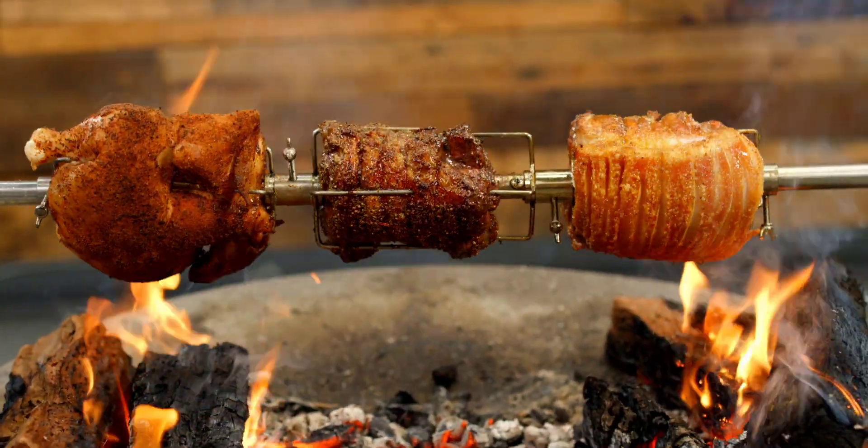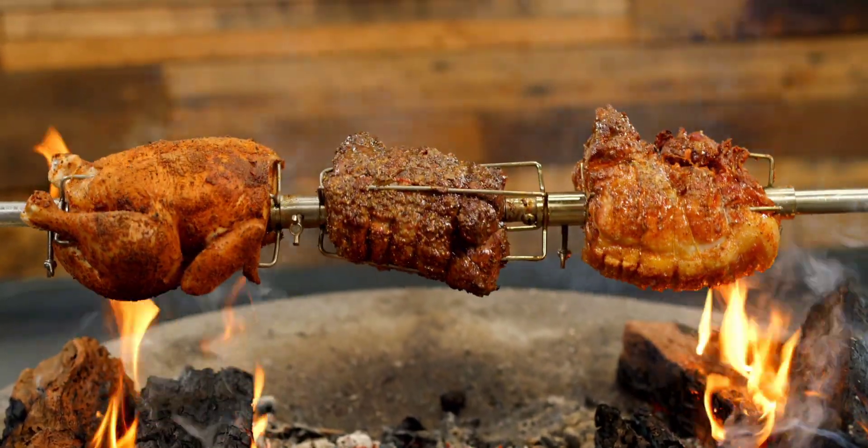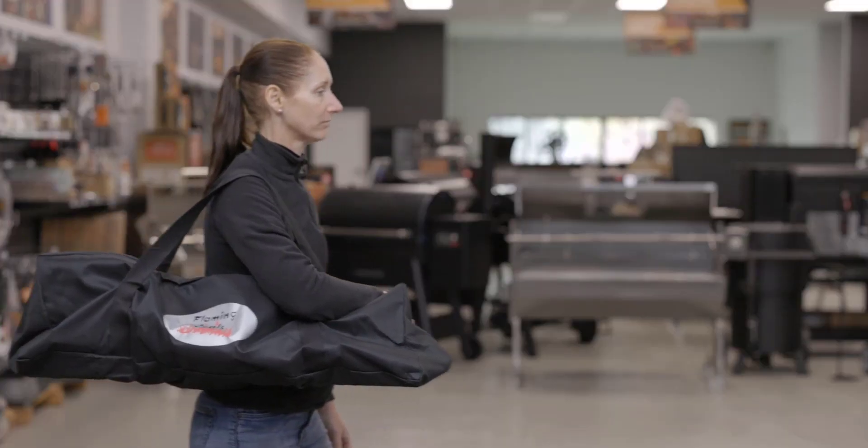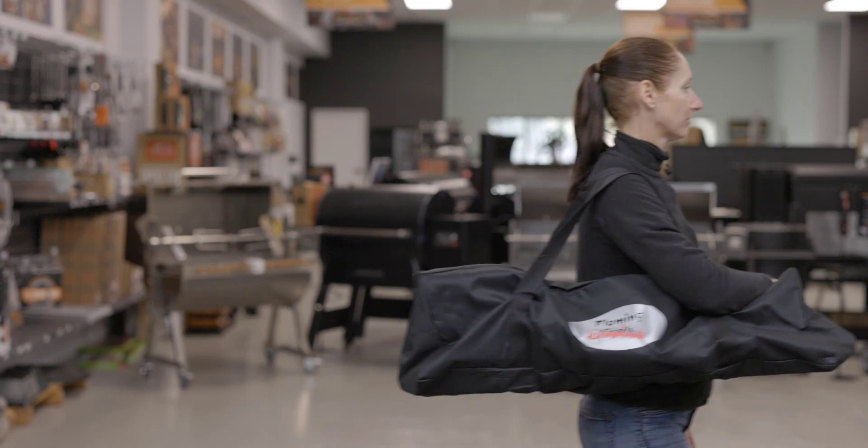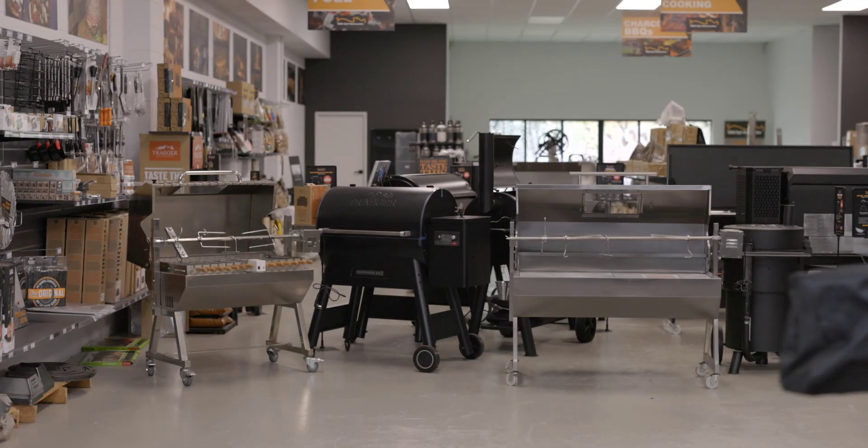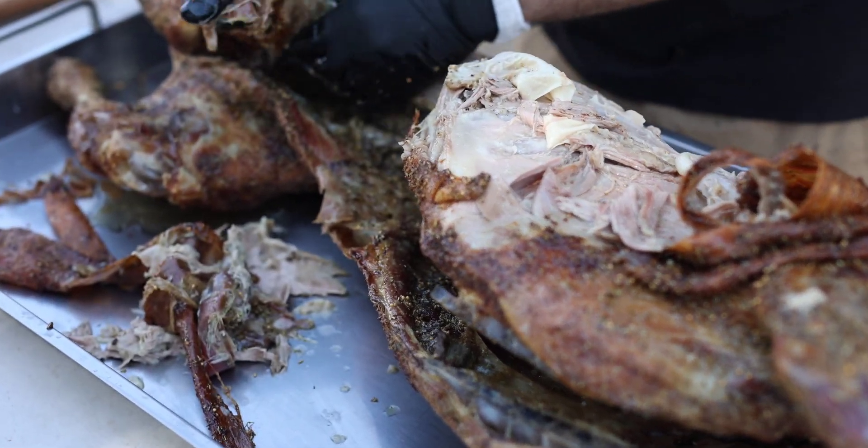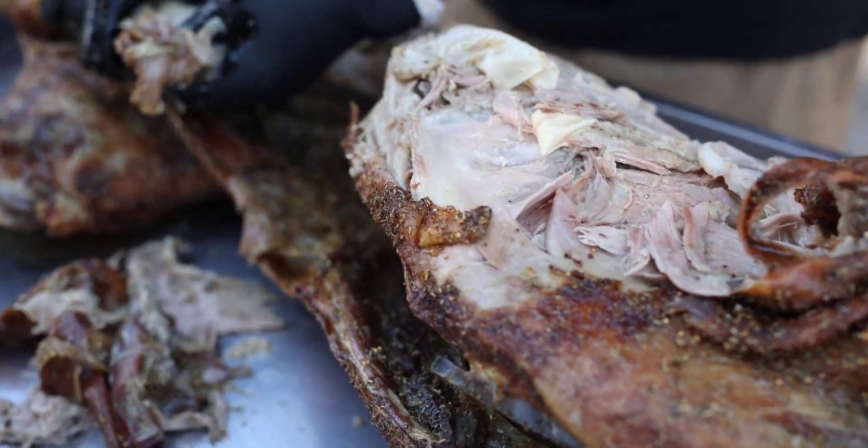We also understand the importance of having a small and lightweight footprint when camping, and Flaming Coals have delivered. The whole unit, including the motor, weighs less than 10kg. This achievement is pretty remarkable, considering you can cook a whole pig or lamb while out in the bush.